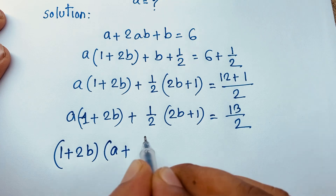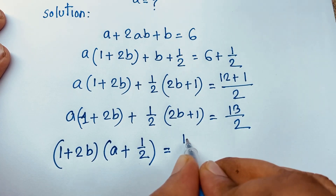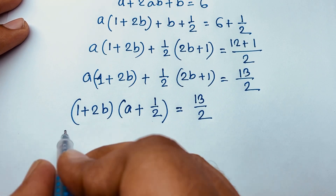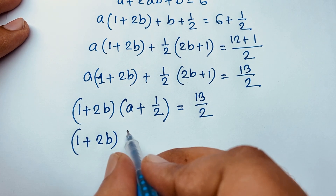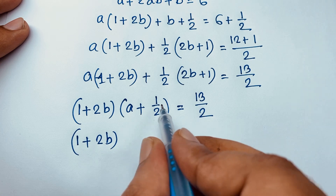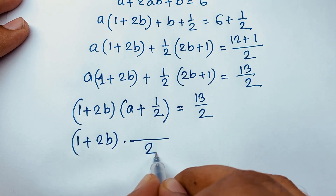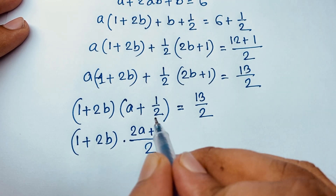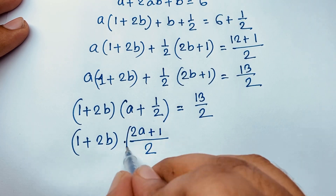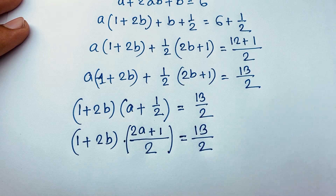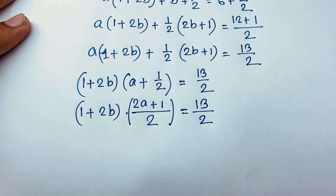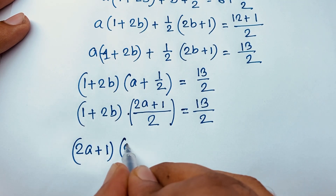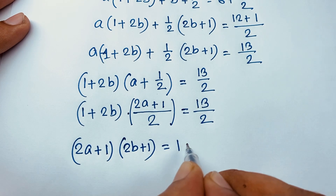Factoring out (1 + 2b), we get (1 + 2b)(a + 1/2) = 13/2. The least common denominator is 2. Now if I multiply both sides by 2, we find (2a + 1)(2b + 1) = 13.